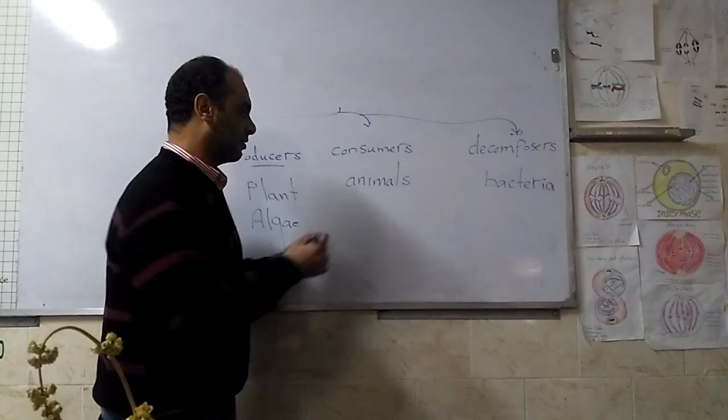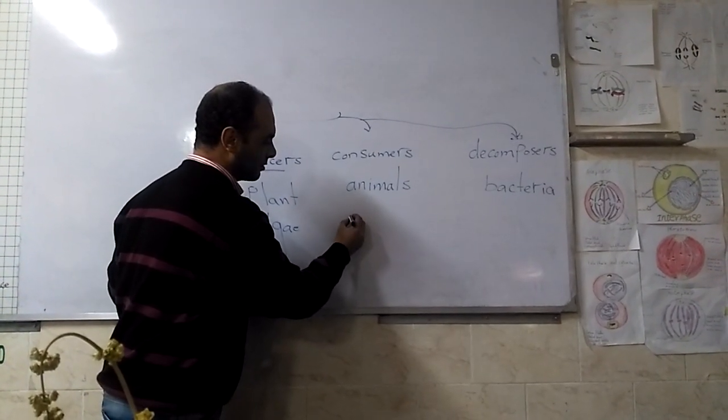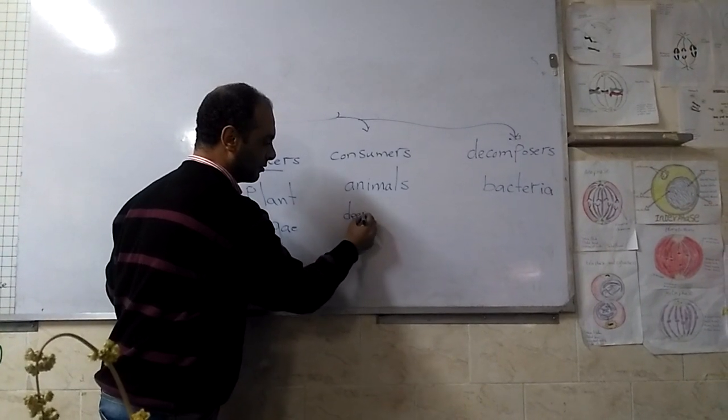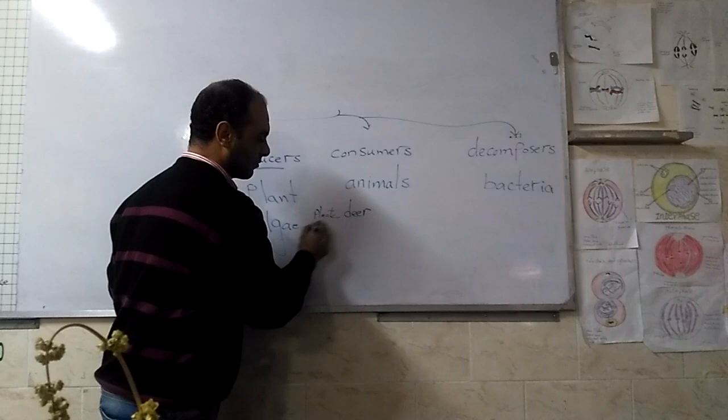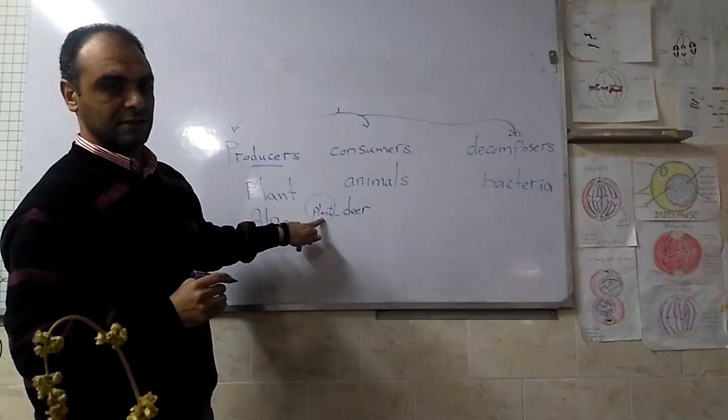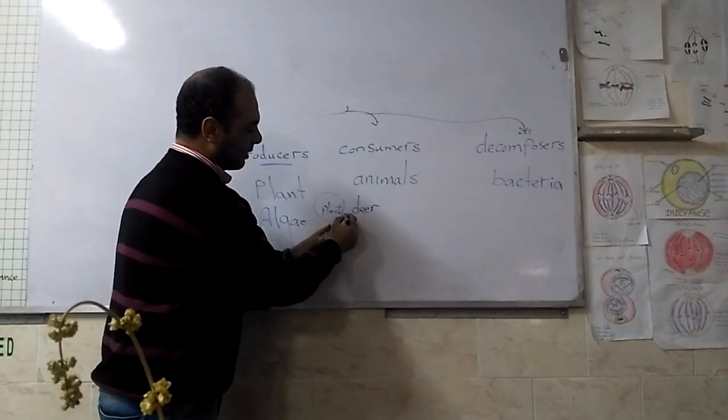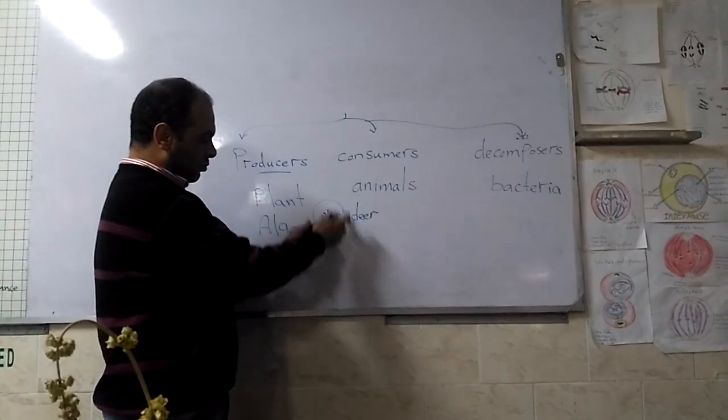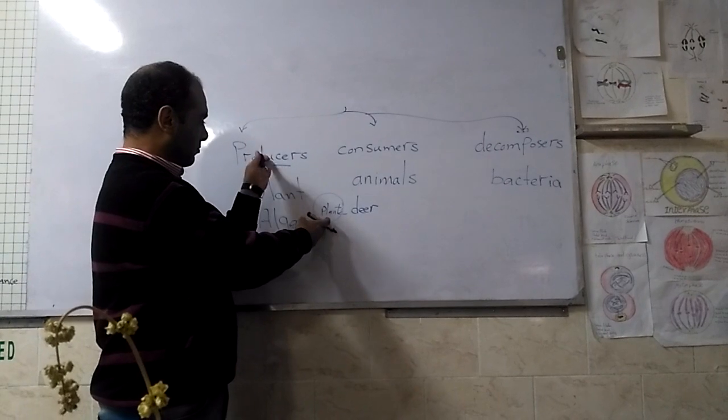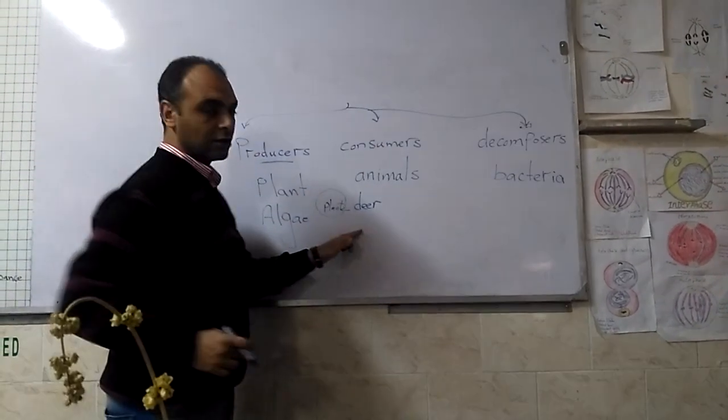For example, if we talk about deer: deer eat plants. After the plant makes its food, deer get energy from the plant. So the plant is a producer and the deer is a consumer.